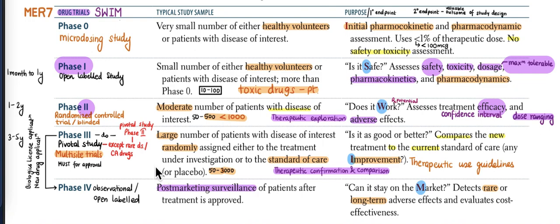Pivotal study is mainly done in Phase 3, but in the case of cancer drugs and rare diseases, it is done in Phase 2.